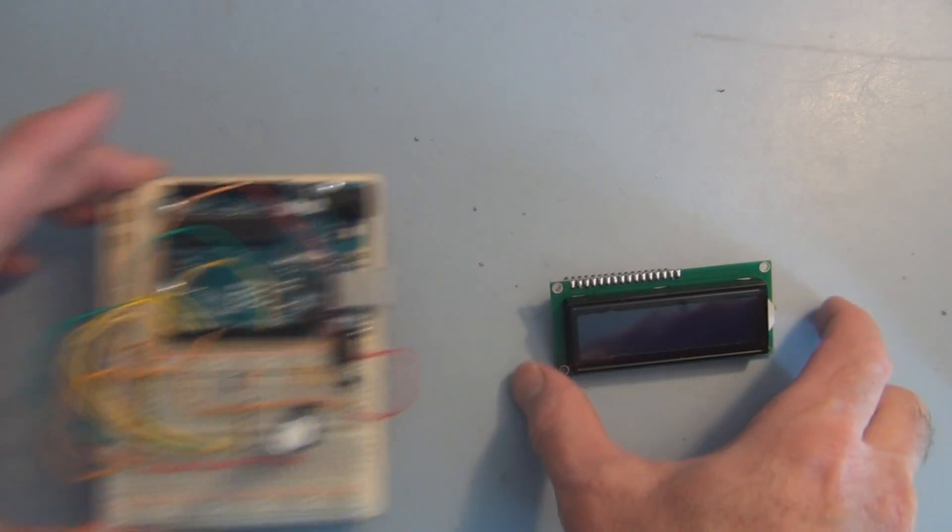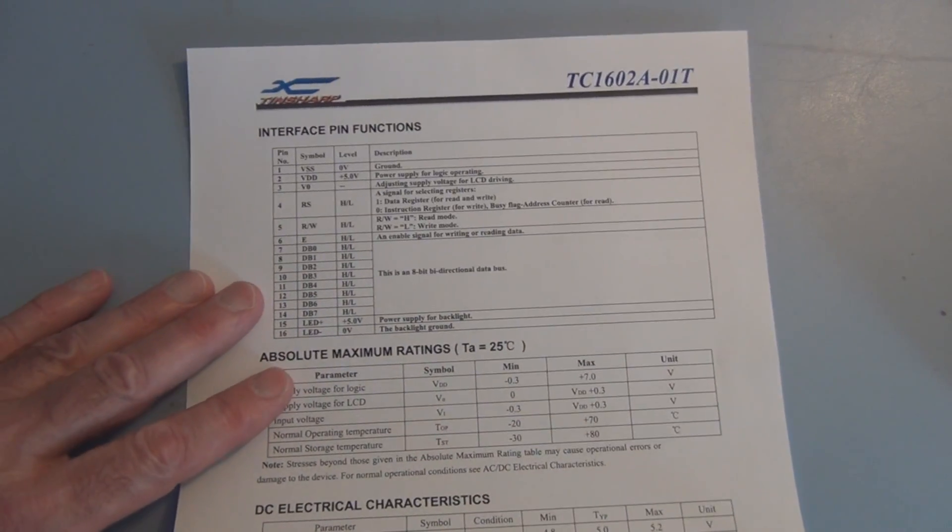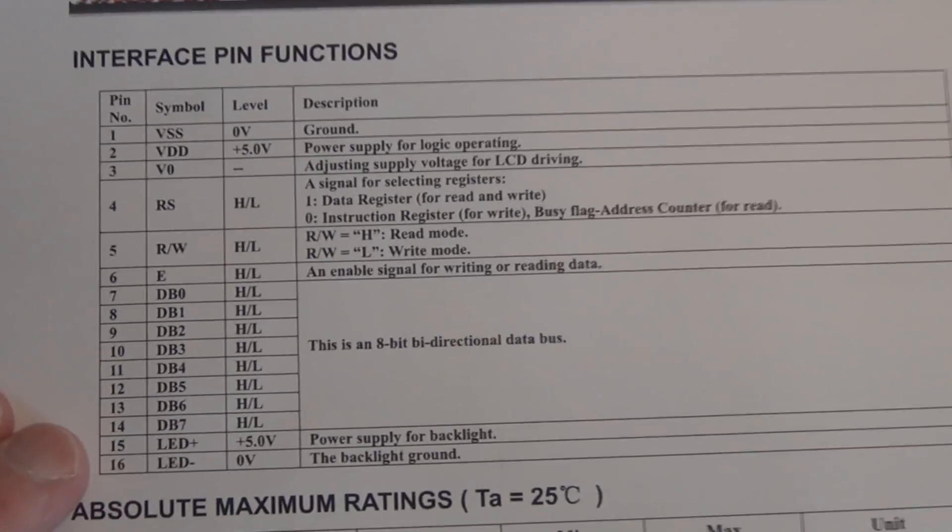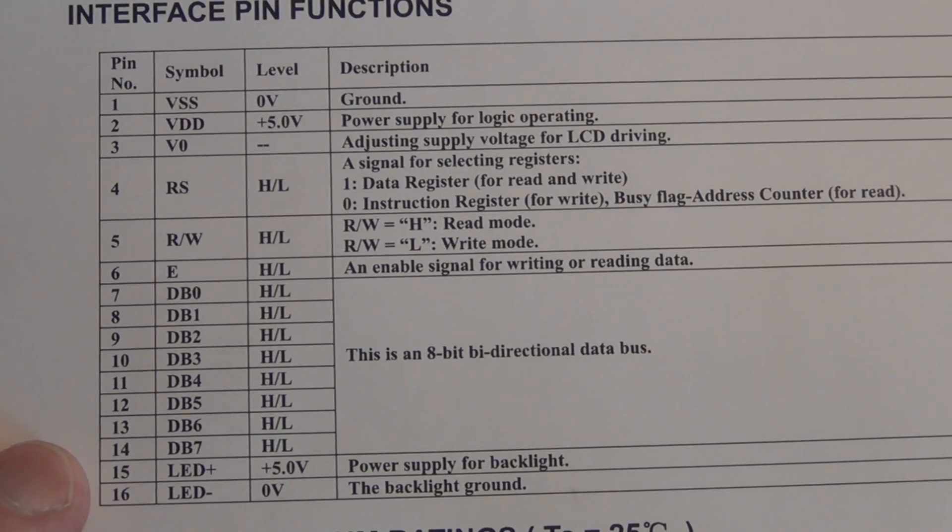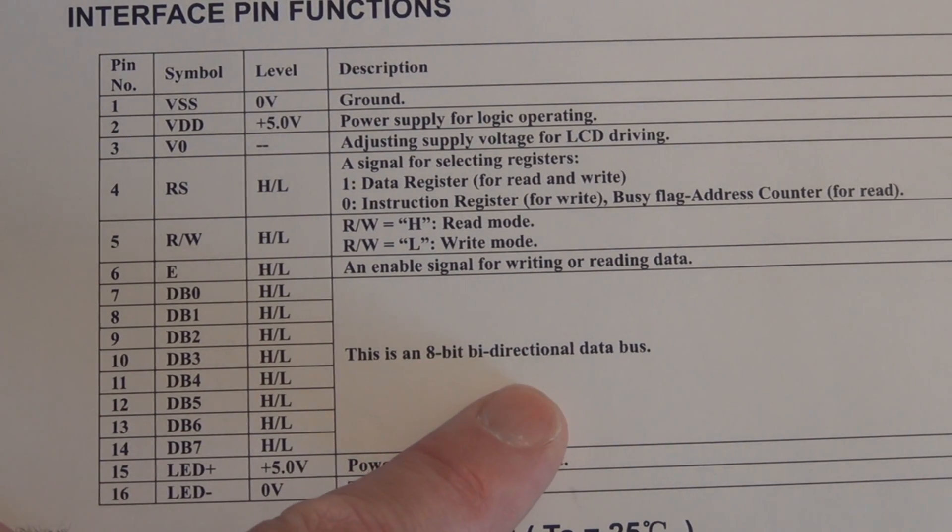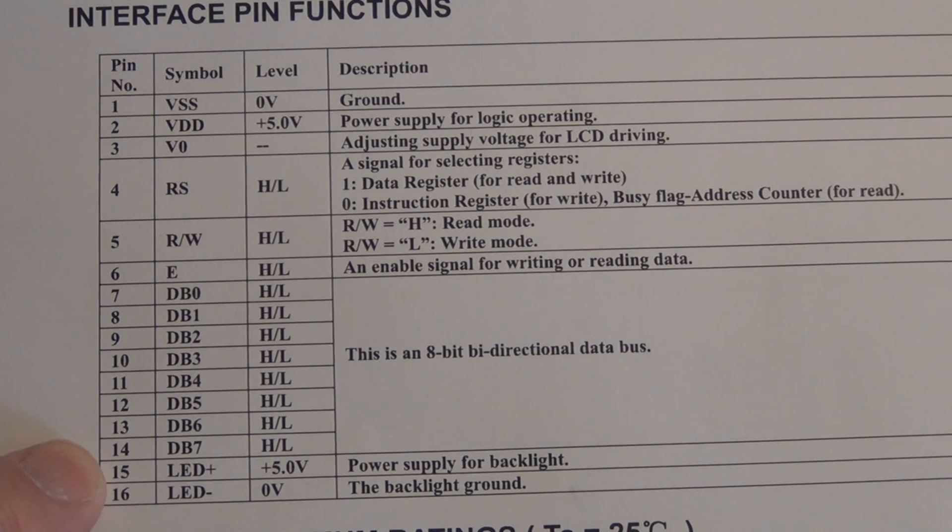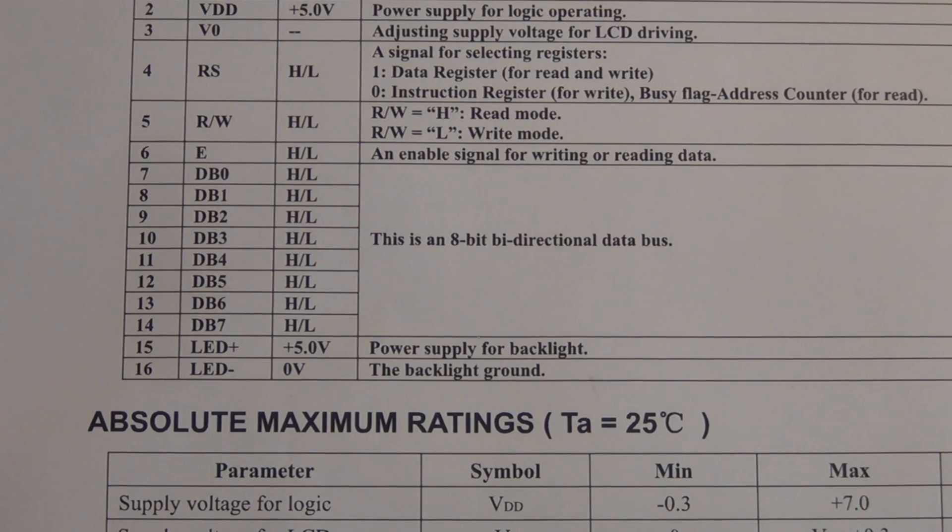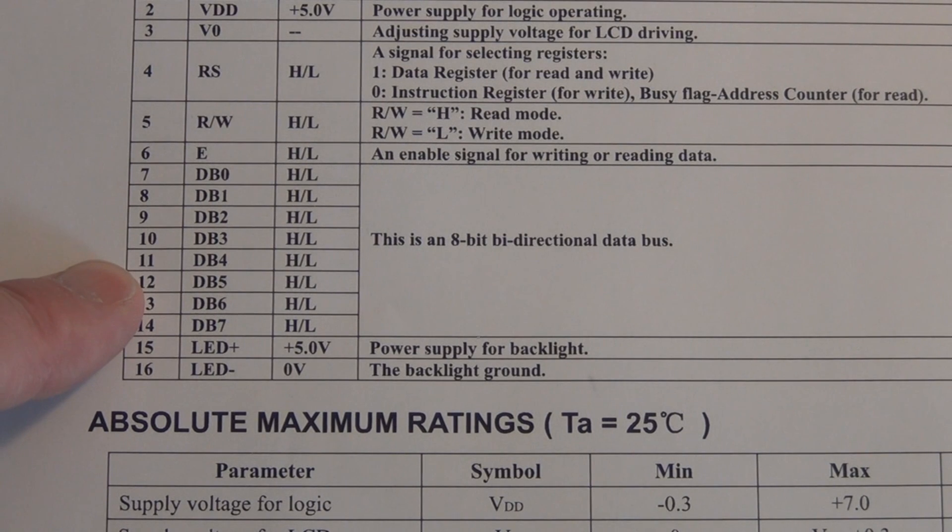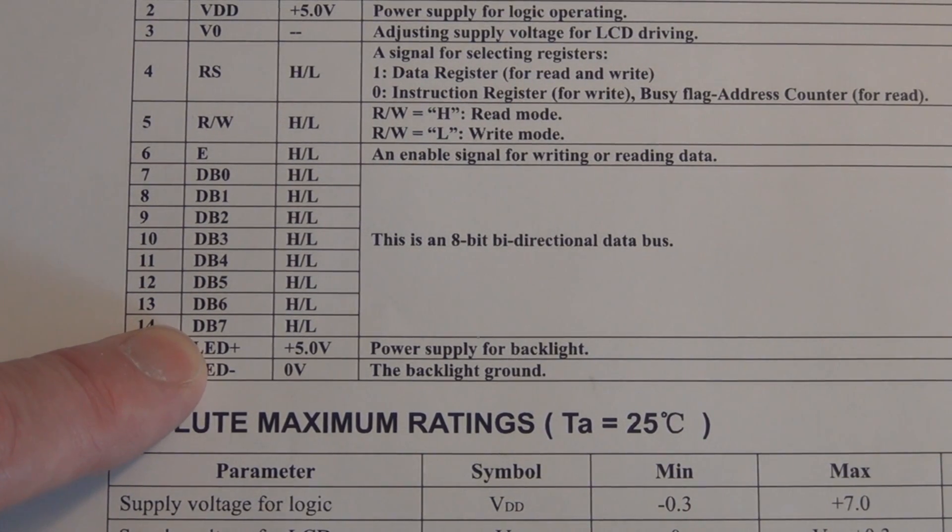Let's take a look at the datasheet. I just printed out one of the pages showing the pinouts. So there's an 8-bit bi-directional bus, and those are pins 7 through pins 14. In this circuit we're only going to be using data pins D4 through D7.